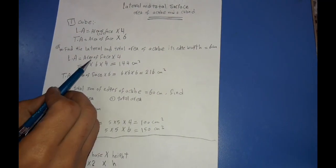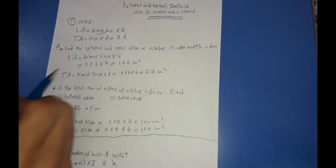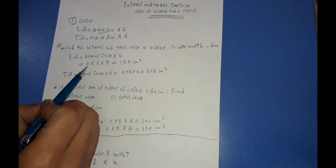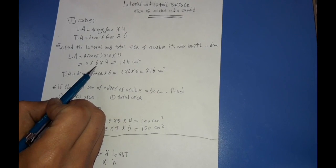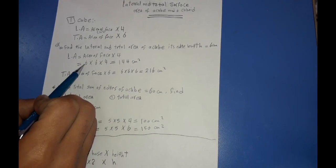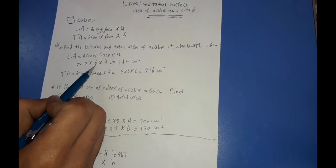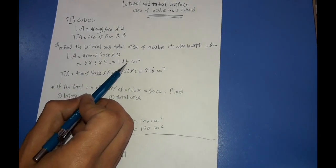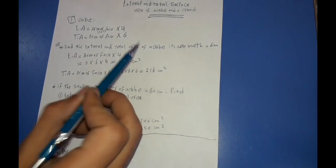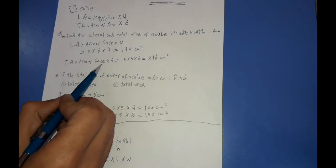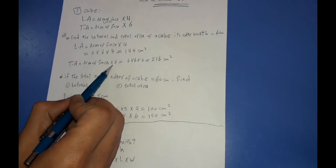Lateral area equals area of one face multiplied by 4. The face is a square, so area of face equals 6 × 6. Therefore, lateral area equals 6 × 6 × 4, which equals 144 cm².